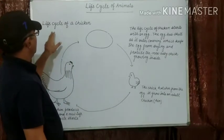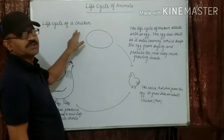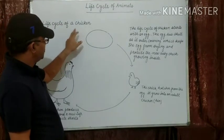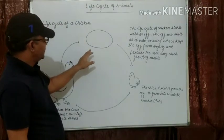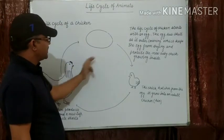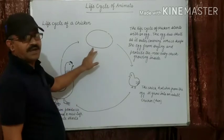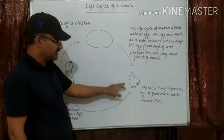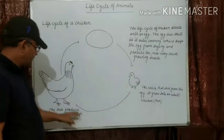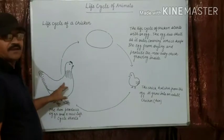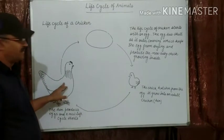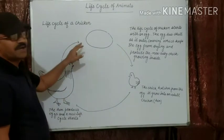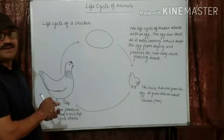Now, the life cycle of the chicken. The chicken starts its life cycle from the egg, then converts into a chick, and the chick converts into a hen. The hen again produces eggs — this is the life cycle.